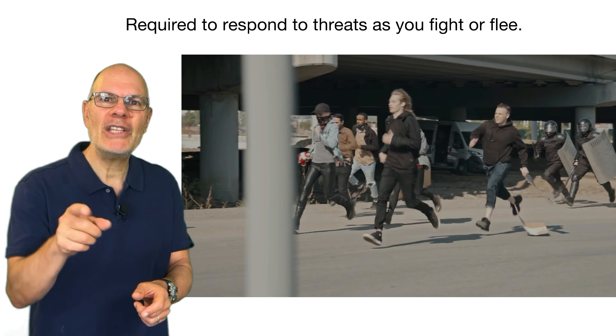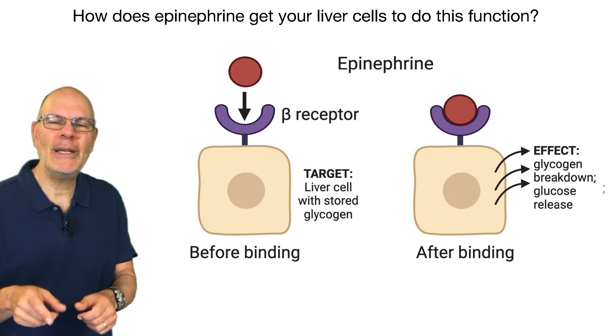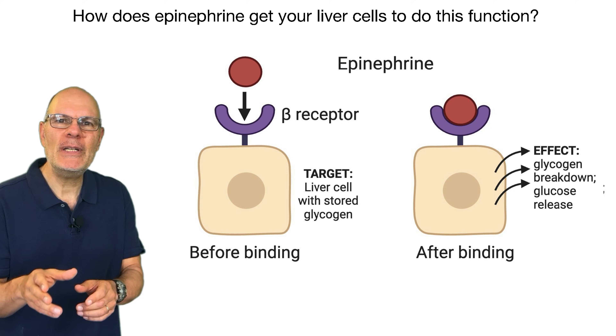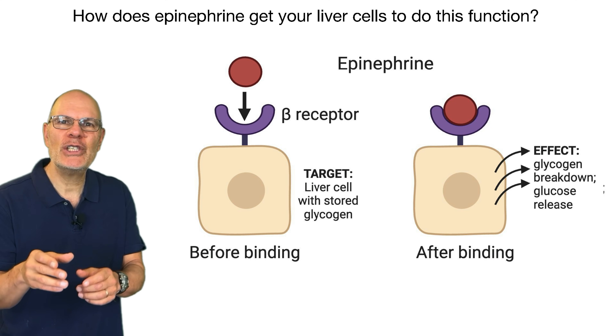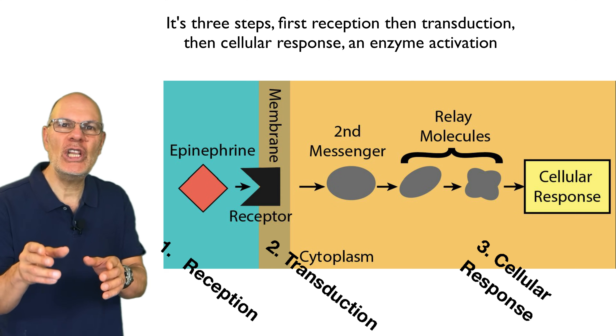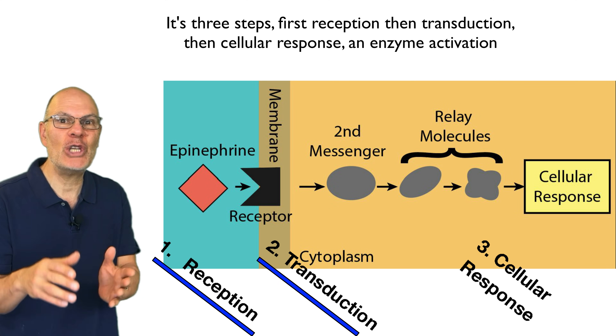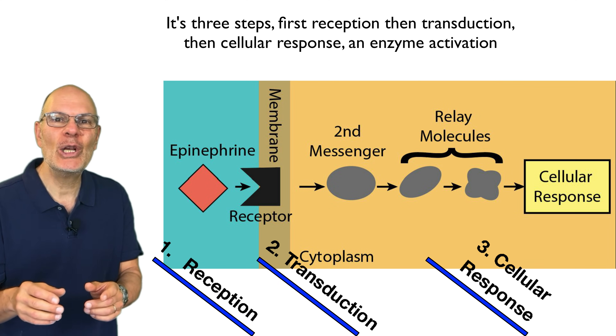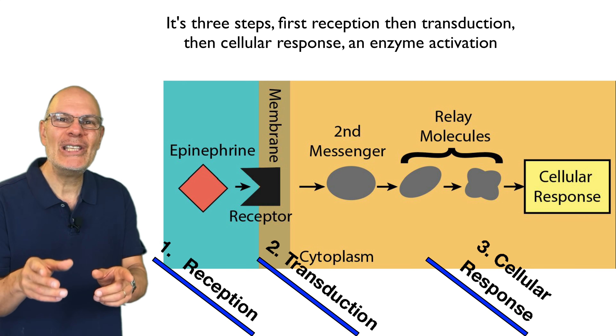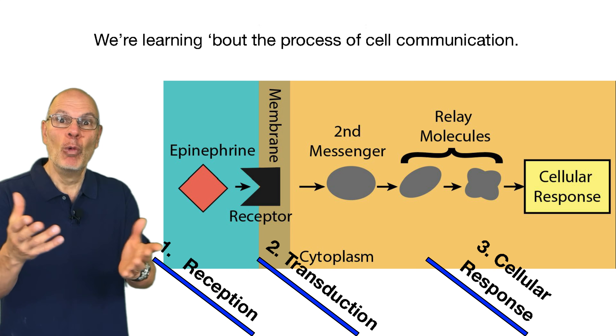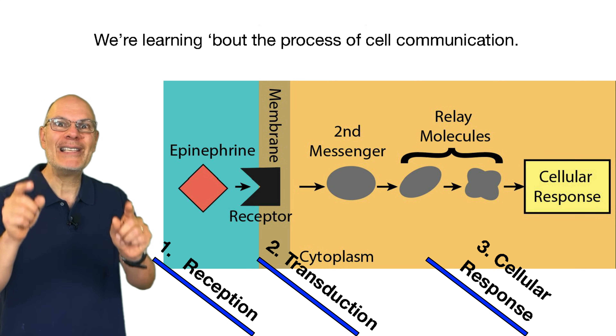Required to respond to threats as you fight or flee. How does epinephrine get your liver cell to do this function? It's three steps: first reception, and then transduction, then cellular response and enzyme activation.